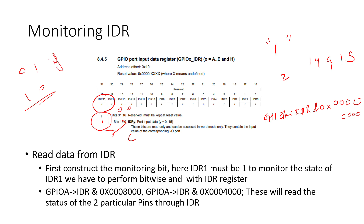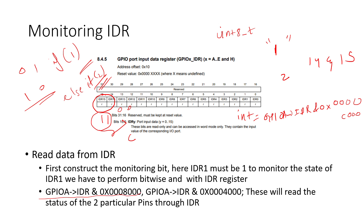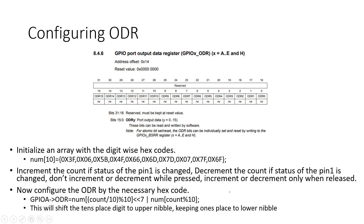You can store the result in a uint8_t variable. Alternatively, read the pins individually: reading pin 15 gives 0x8000 and reading pin 14 gives 0x4000. This way you can distinguish the status of each pin through the IDR — one for the increment switch and one for the decrement switch.